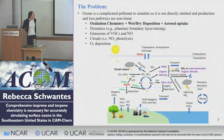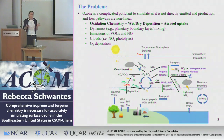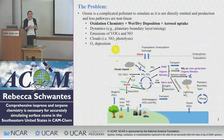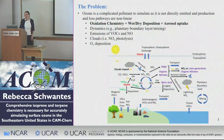Ozone is a complicated pollutant to simulate. It's not directly emitted, and its production and loss pathways are extremely nonlinear, which makes it really hard to get right in models. I'm going to be talking a lot about the oxidation chemistry — the actual chemistry — and also wet and dry deposition and aerosol uptake of gas phase compounds. But you also have to get dynamics, emissions, clouds, and deposition correct in order to capture ozone correctly for the right reasons, which is the objective of models.